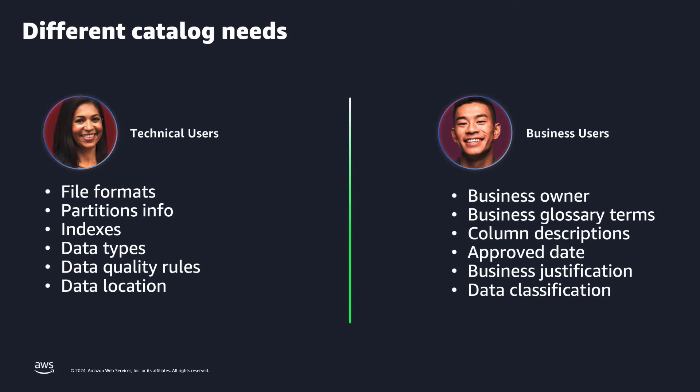Depending on the type of users that you are, you may have different data catalog needs. For example, technical users want to see things like file format, data types, data location, and so on. And business users want to see things like business glossary terms, column descriptions, business justification, data classification, and so on. So even though it's the same data, different types of users want to see different information.